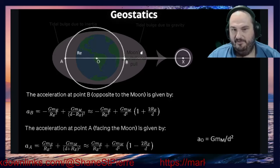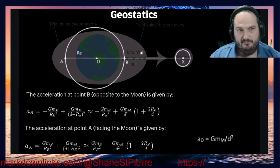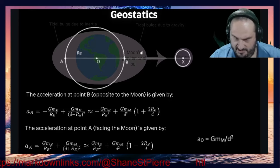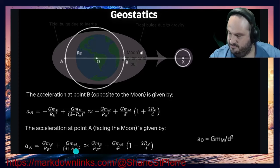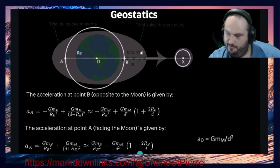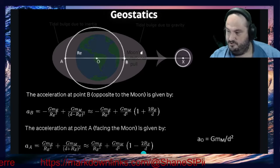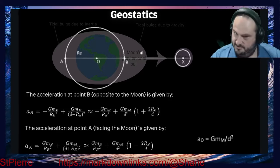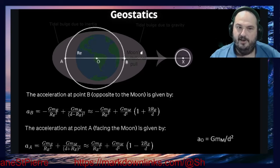Figuring these calculations out — the acceleration at point A and the acceleration at point B for the tidal lunar acceleration of each celestial body — he calculates: a(A) = G·M_e / r_e² + G·M_m / (d + r_e)², which breaks down to G·M_e / r_e² plus G·M_m / d² times (1 - 2·r_e/d). And a(O) — the acceleration at the center of Earth — equals G·M_m / d². So we're solving for a(O), a(B), and a(A).